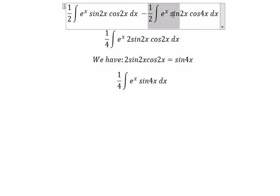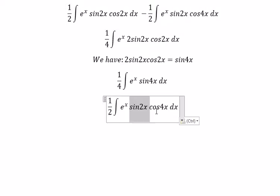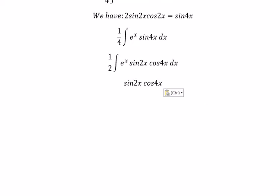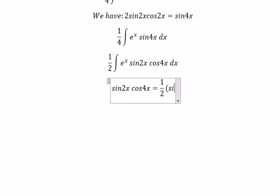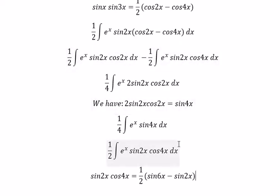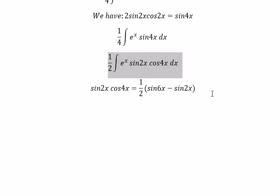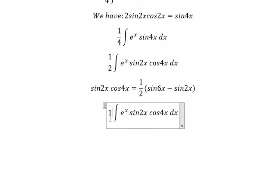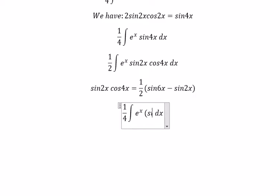The second one: sine 2x, cosine 4x. You get about 1 over 2, sine 6x, minus sine 2x. So in this situation, you will get about 1 over 4, multiplied with sine 6x, minus sine 2x.